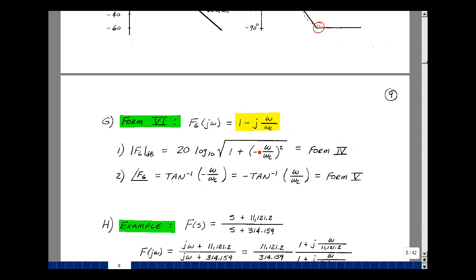The first six forms deal with a constant or real roots. We'll talk about the remaining two forms a little bit later in the chapter. And these are some of the basic forms of sketching a Bode plot.